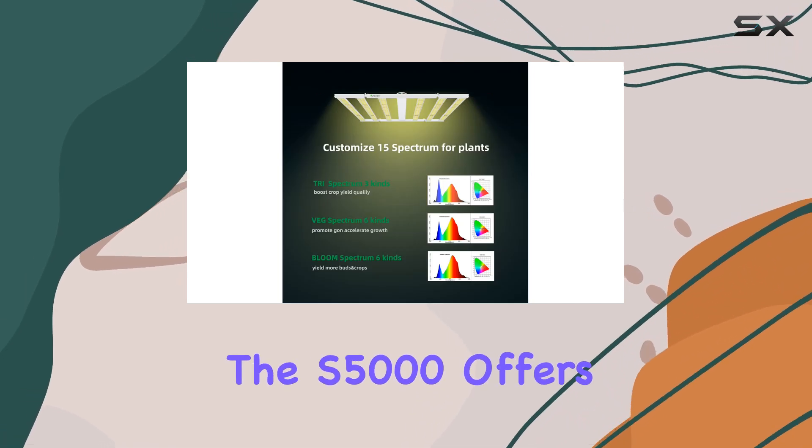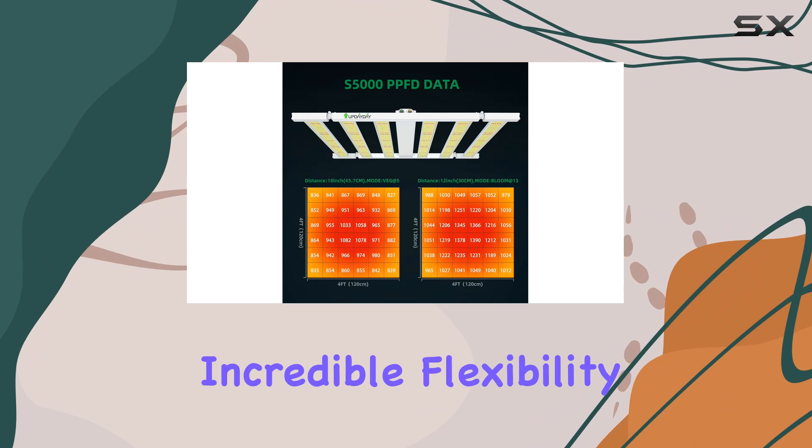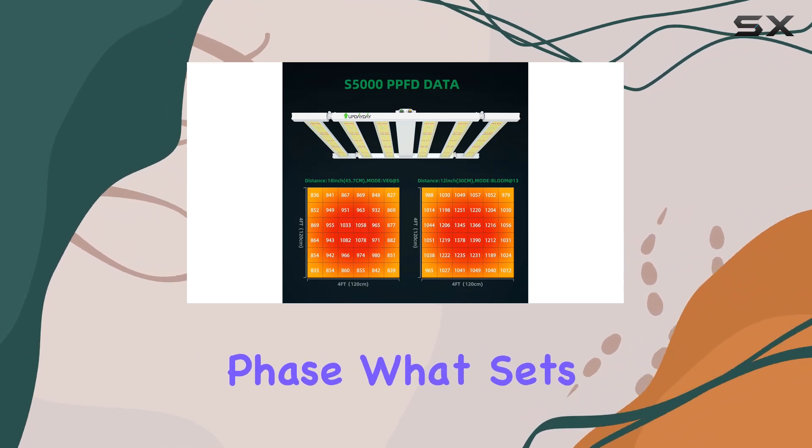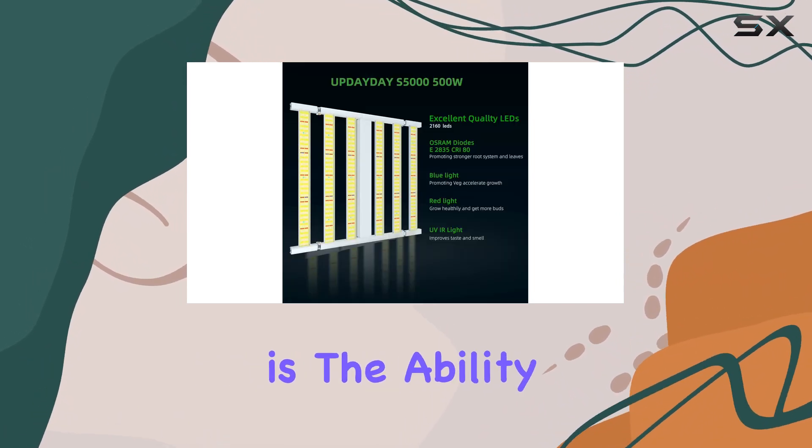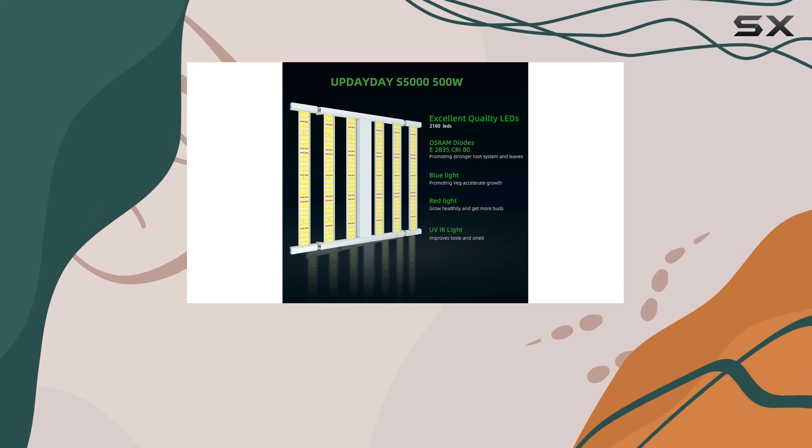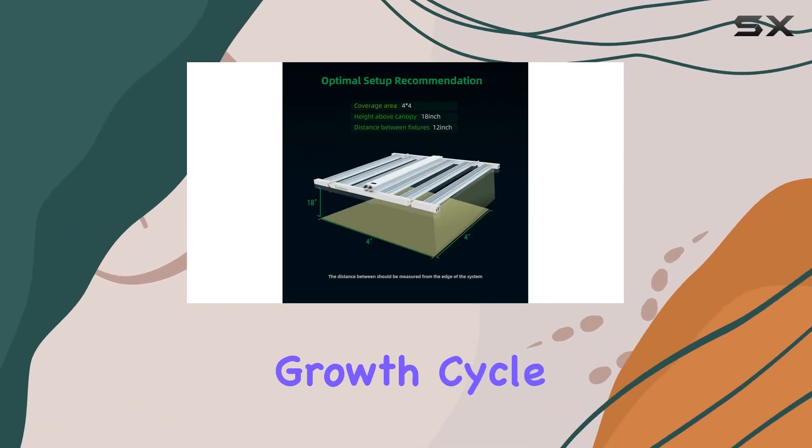Whether you're looking to replicate sunlight with the sun spectrum or prefer the light quality of MH, CMH, or HPS spectrums, the S5000 offers incredible flexibility to optimize for any growth phase. What sets this light apart is the ability to adjust the spectrum according to the plant's needs, making it suitable for the entire growth cycle from seedling to bloom.